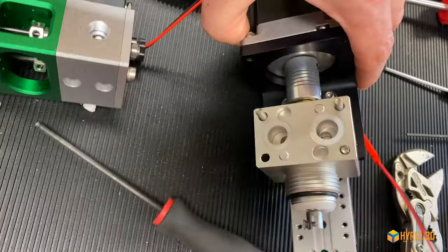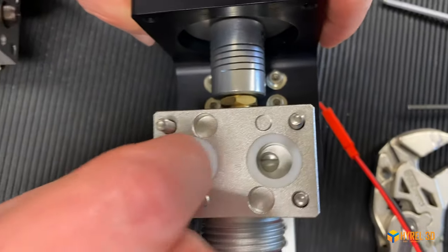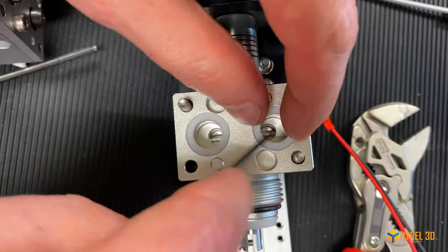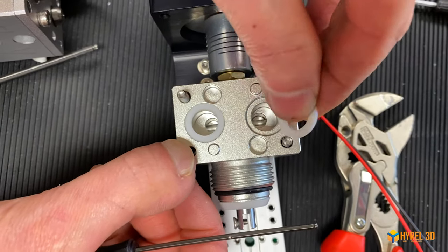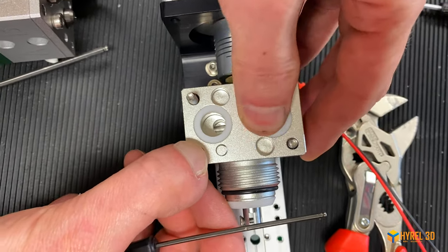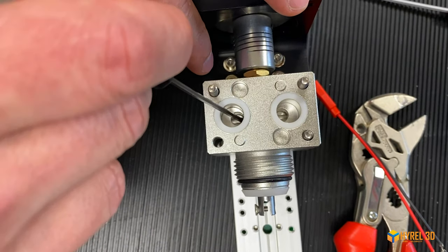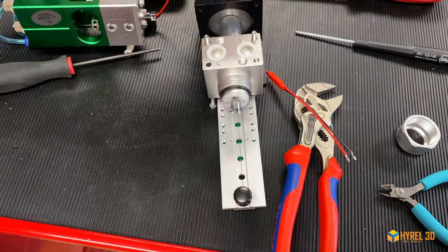On this end you can see the mixing channels right there. These plastic o-rings can pop out if necessary—just make sure you replace those before you reassemble. You can see the path right here. The material goes in here and comes out this hole. It goes in here, goes out this hole.